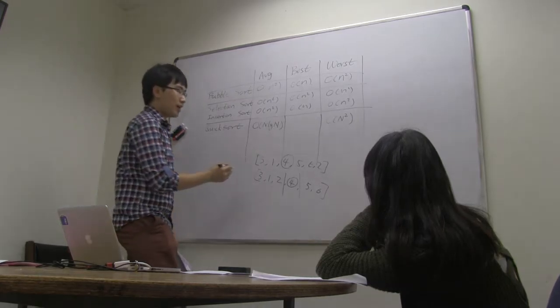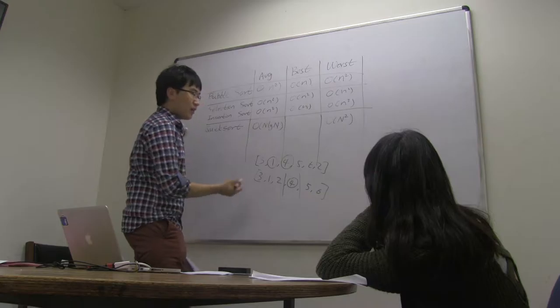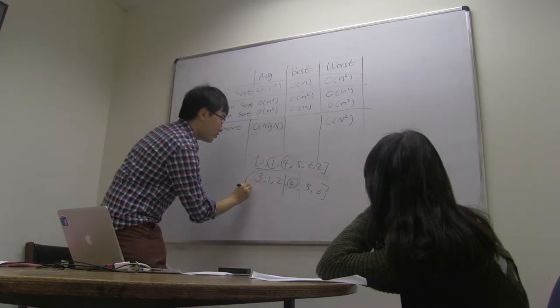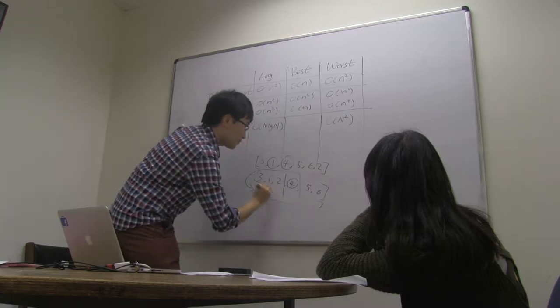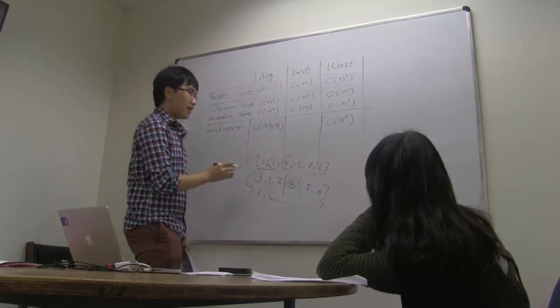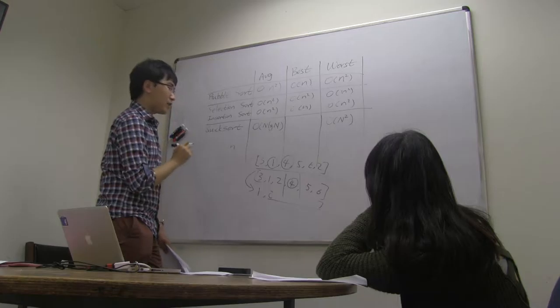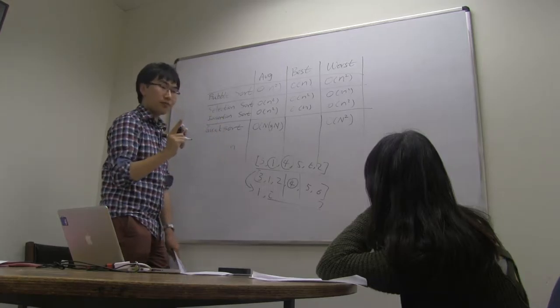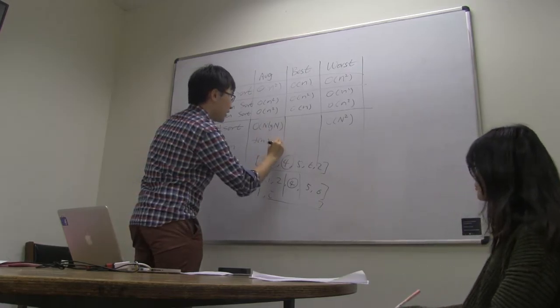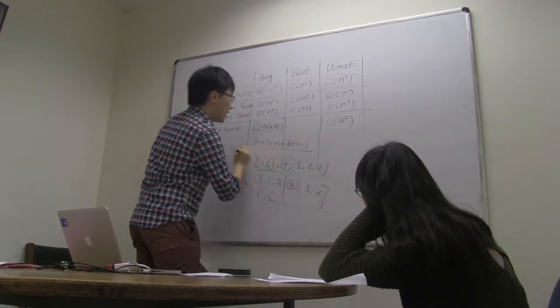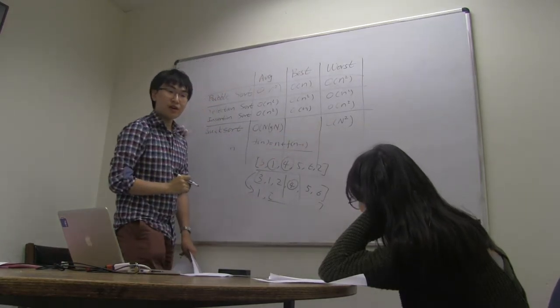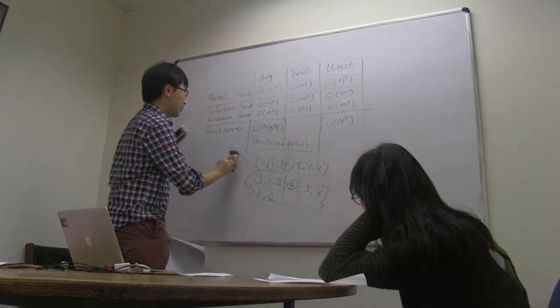However, if we are picking something like 1, then we are transforming a size 6 array into 1, and a size 5 array. Then, if we are picking the worst pivots, then actually we will still use n passes, and for each time, the scale only decreases by 1, right? So, it will be T(n) equals to n plus T(n minus 1), and according to the algorithm theory, we know that the time complexity will be order n squared. Okay, that's the worst case situation.